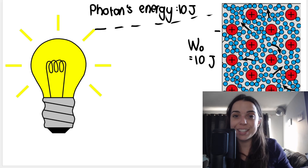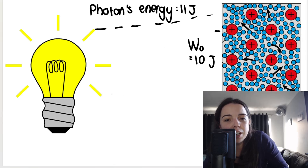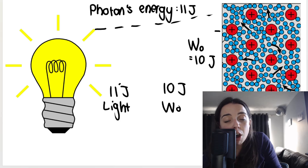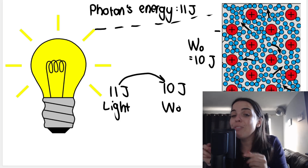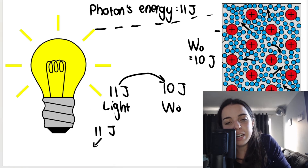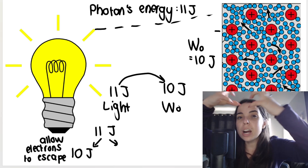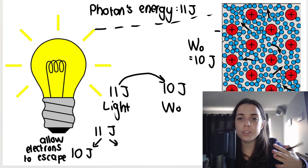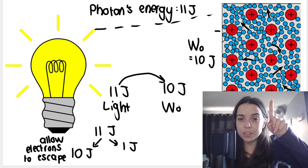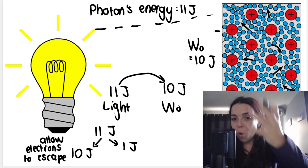If I continue to increase the light's energy above the work function — let's say I use 11 joules of light energy — my work function is only 10 joules. I only need 10 of those 11 joules to allow the electron to escape. So of the 11 joules, 10 joules are used to allow the electrons to escape, overcoming the attractive forces inside the metal. But then what about that extra one joule? That extra one joule of energy is going to be allocated to give the electrons more kinetic energy.